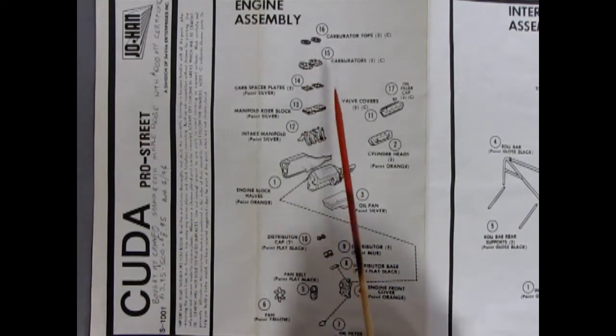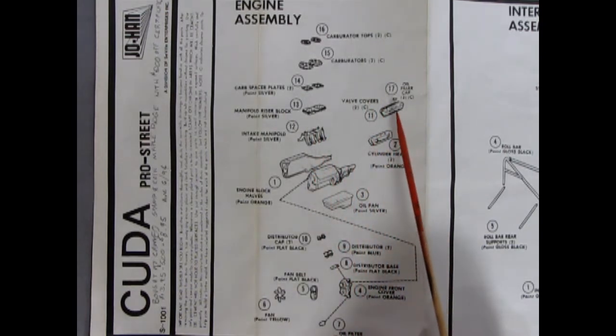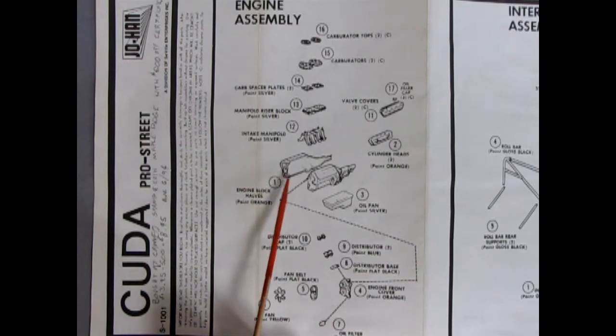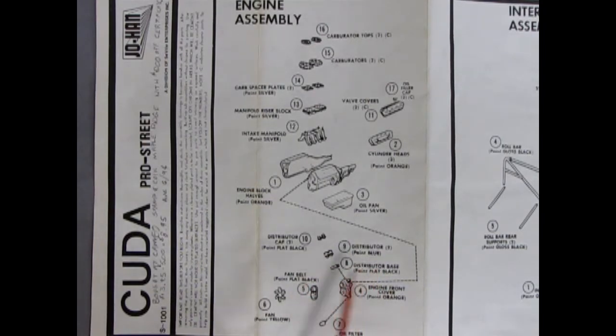There's the carburetor tops, our four-barrel carburetors, the carburetor spacer plates, the manifold riser block, the intake manifold, our cylinder heads, our valve covers with the oil filler cap molded separately that you pop in. The engine blocks left and right also have the transmission off the back. Oil pan glues up underneath there. There we've got the dual distributors with the housings for them. The distributor base. So you've got caps, distributor, and the base. Three parts. Glues on the front engine cover with the oil filter, the fan belt, and the fan. Far out!